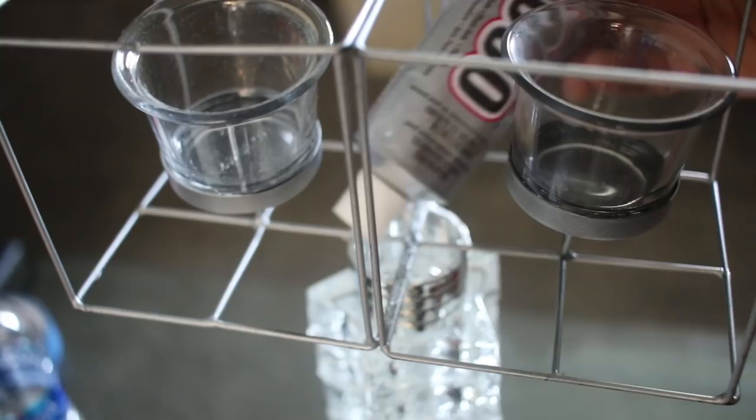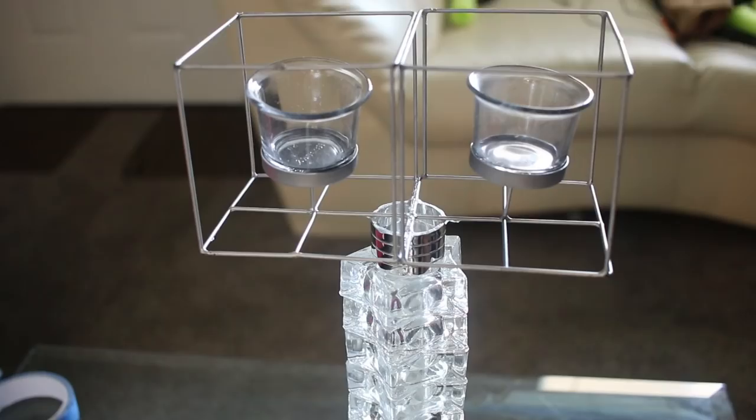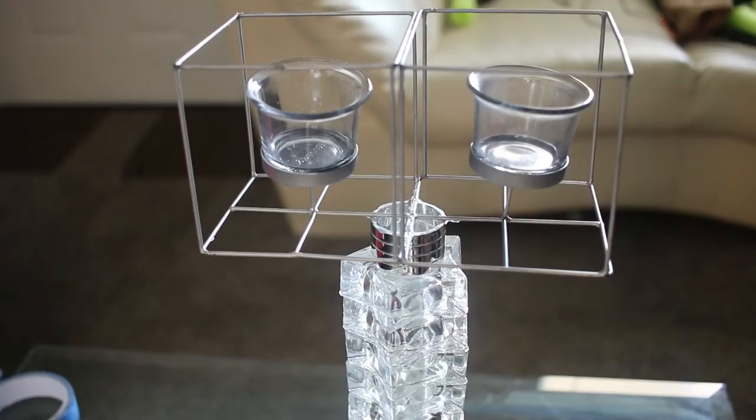Then I glued the silver candle holders on top of the napkin rings. I hot glued a wooden dowel inside the lampshade and placed it on the candle holders.